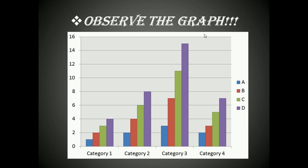Category three — let us observe closely. Category one has four bars: blue, red, green, and purple. If you observe carefully, the height of each and every bar is increased by one unit. Now coming to category two — the four bars again move from blue to red, red to green, and green to purple.